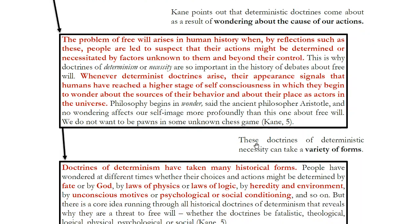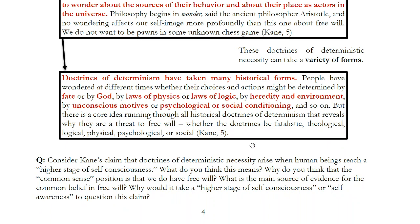Cain says determinist doctrines can take many historical forms — what you do could be determined by fate, by God, by the laws of physics, your genetic makeup, your heredity, or your environment. The most famous psychologists of the 20th century — Skinner and Freud — each gave a different deterministic explanation of human behavior. Freud said it was unconscious motives you're not aware of; Skinner said it was social conditioning. For all these doctrines to arise, we have to stop looking at our actions just from our own point of view and start to wonder: what caused me to act this way?